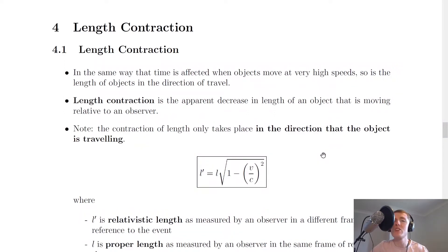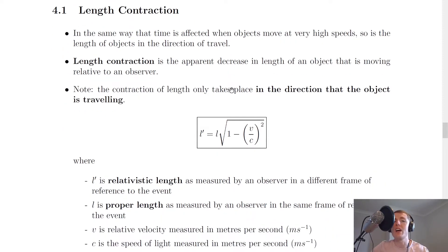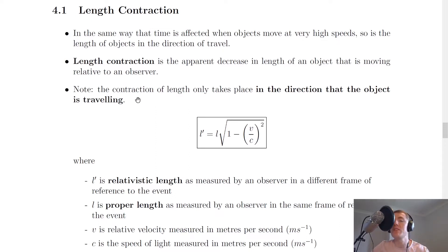Now just like time dilation, length contraction is another consequence of special relativity. In the same way that time is affected when objects move at very high speeds, so is the length of objects in the direction of travel. Length contraction is the apparent decrease in length of an object that is moving relative to an observer. The contraction of length only takes place in the direction that the object is travelling, so if you were to look at an object side on, it would not appear to be contracting in length.